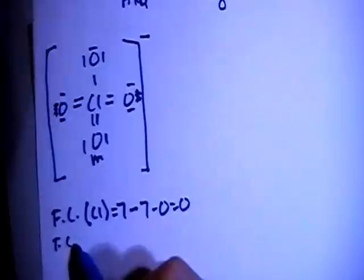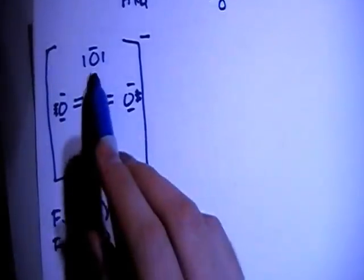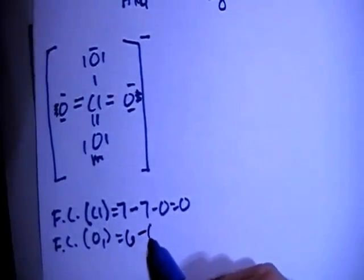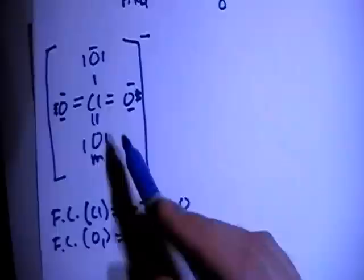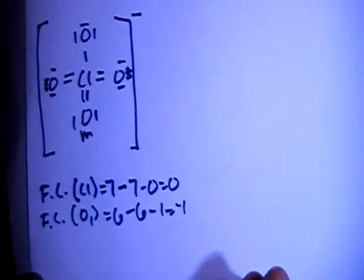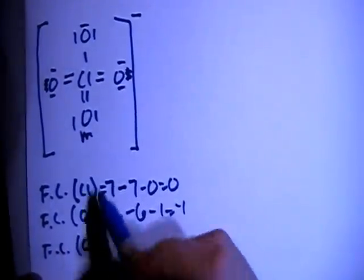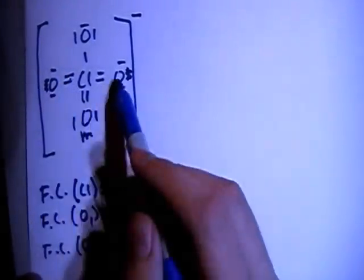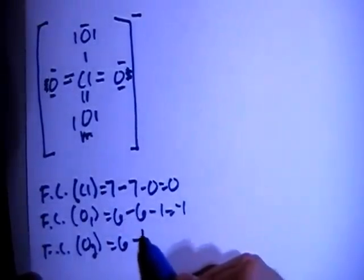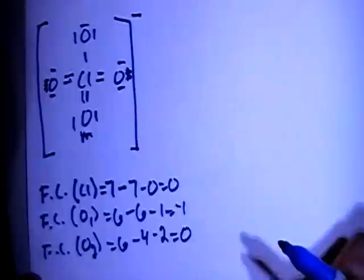Now we can do the formal charges of the oxygen with a single bond — O sub 1. That's 6 valence electrons brought in, minus 6 non-bonding electrons, minus 1 bond, which gives a minus 1 charge. And for the oxygen with a double bond — O sub 2 — that's 6 valence electrons brought in, minus 4 non-bonding electrons, minus 2 bonds, giving a formal charge of 0 for each of those oxygens.